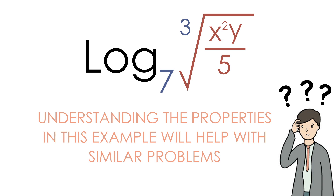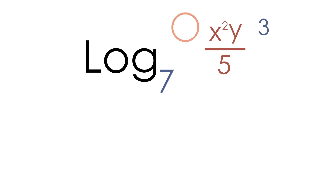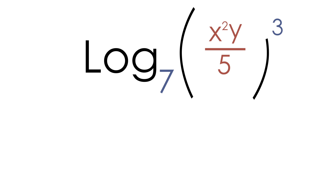The first thing I want to do to solve this problem is get rid of the radical — let's get rid of this cube root. The cube root can be rewritten with a one-third exponent; it's exactly the same. So the cube root of x squared y over five can be rewritten as x squared y over five, all with a one-third exponent.